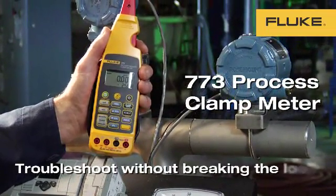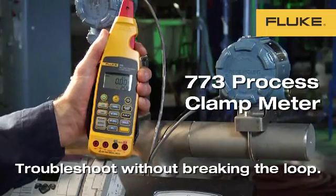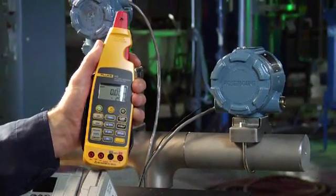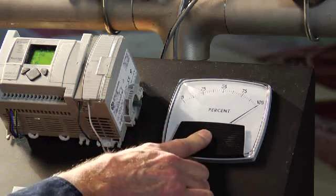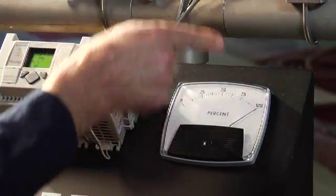The Fluke 773 process milliamp clamp meter is great for troubleshooting without breaking the loop. The local indicator shows that the process loop in a temperature transmitter is in alarm.